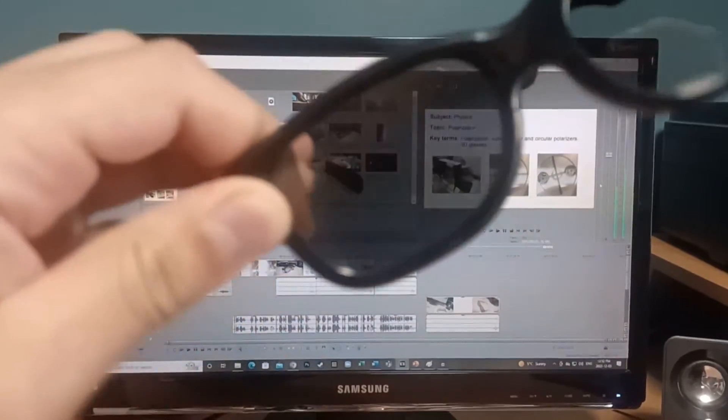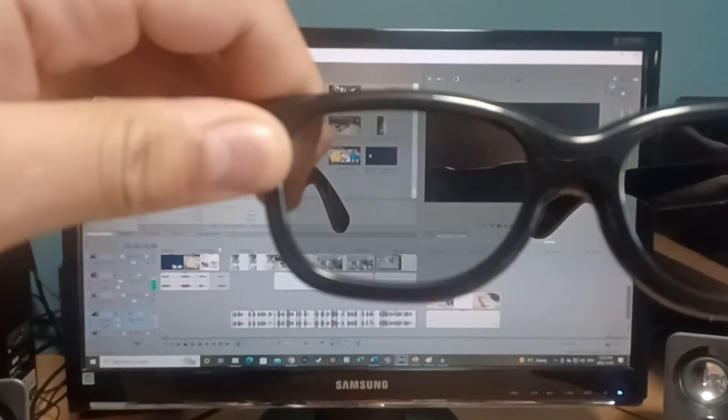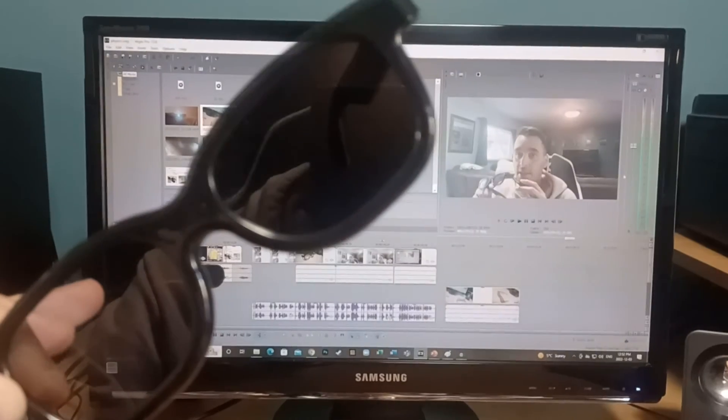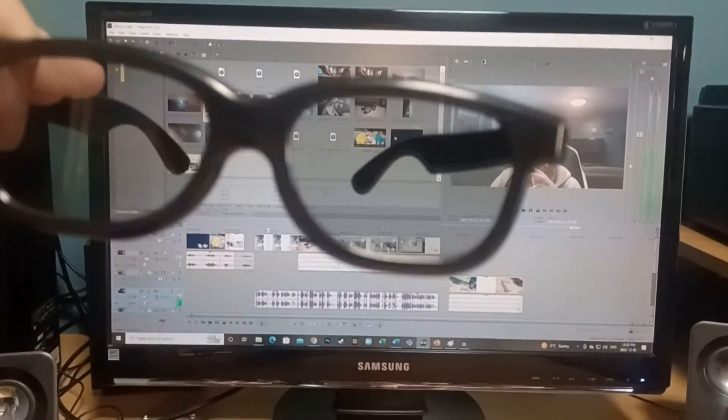If we hold the 3D glasses with the back of the lens closer to the screen and we rotate it, we can see at a certain angle, no matter which lens, the light gets mostly blocked out.